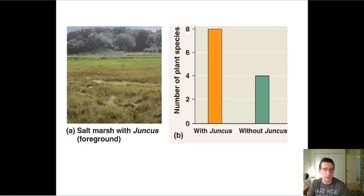In salt marshes, the juncus, which you can see in the foreground, grows and helps the marsh a lot. Notice that if the juncus is present, the number of other plant species increases. Without the juncus, less biodiversity is present in the ecosystem. It's what we call a foundation species or engineer, an ecosystem engineer.